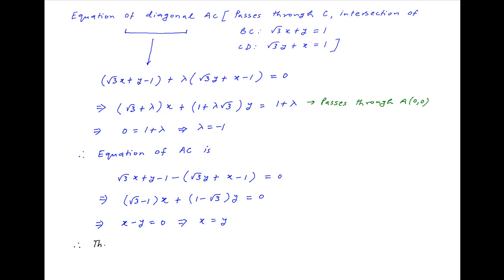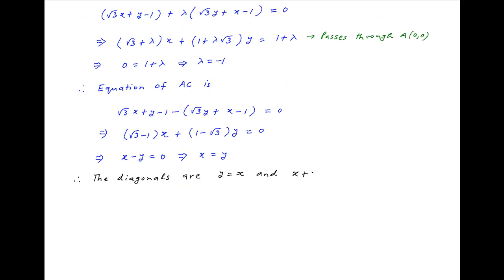To summarize, the equations of the two diagonals are: y = x (diagonal AC), and x + y = (√3 − 1)/2 (diagonal BD). This is the required answer.